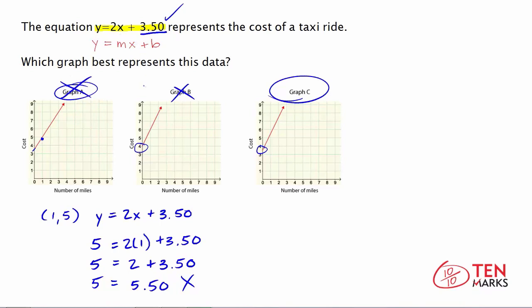Now we can try a point from graph C. Let's use the point 1, and it looks like 1 corresponds with 5.5 here. So we have (1, 5.50). So let's try this point. Substitute again. 5.5 is the y value because that's what we're working with here, equals 2 for the slope times 1 for x plus 3.5.